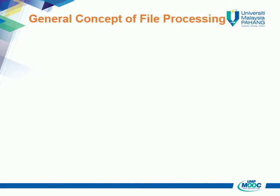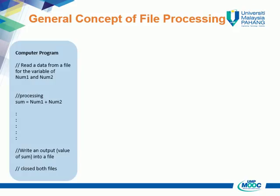We discuss the general concept of file processing. By understanding this concept, students may visualize the overall idea about file processing, and the learning process for the following file operations will be faster. We start with a simple generic computer program: first, read the data from a file; then, do processing to find the sum of two values; write the output in a file; and finally, close the files.